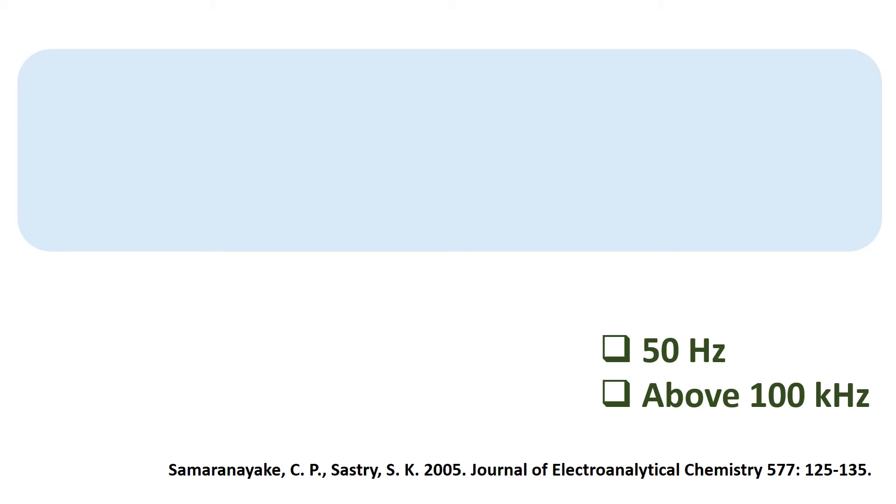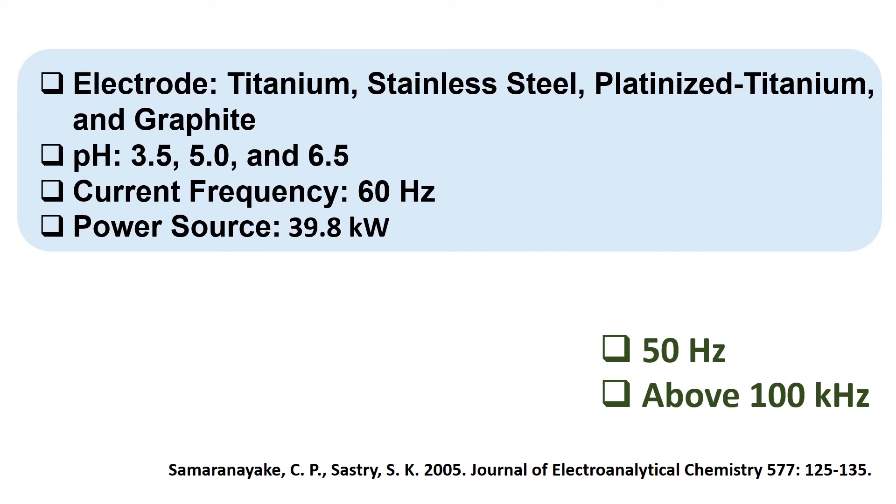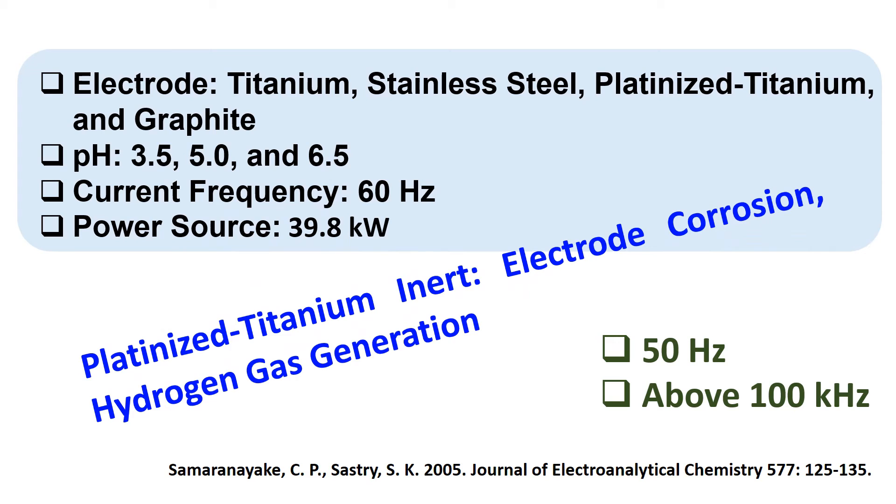An early study used electrode dissolution using titanium, stainless steel, platinized titanium, and graphite electrodes. The pH values used were 3.5, 5.5, and 6.5. Current frequency was 60 hertz and power source was 39.8 kilowatt. Platinized titanium showed relatively inert in relation to electrode corrosion and hydrogen generation at all pH.